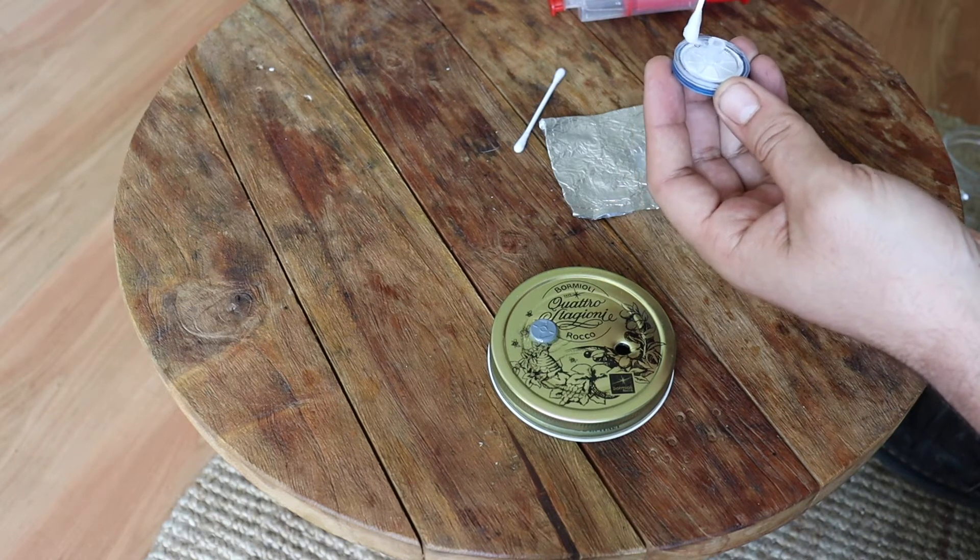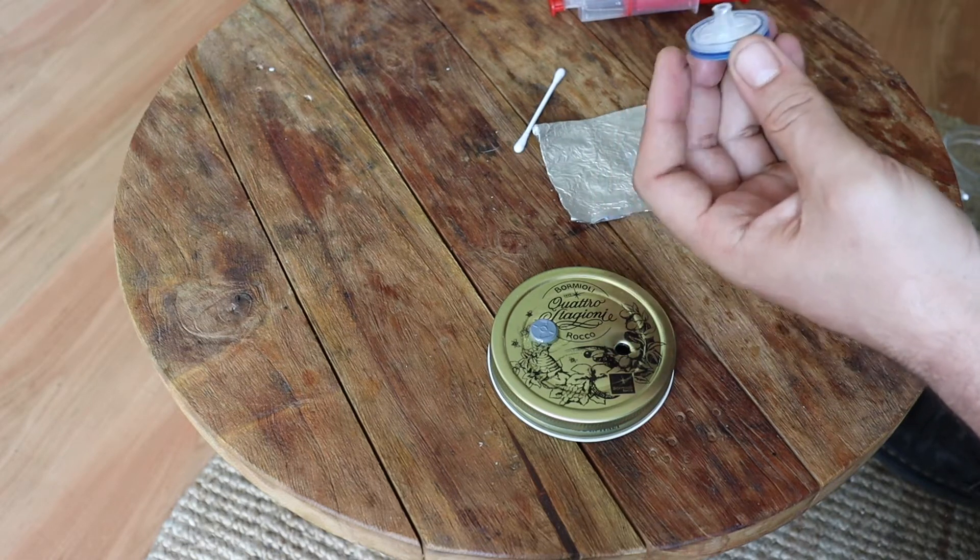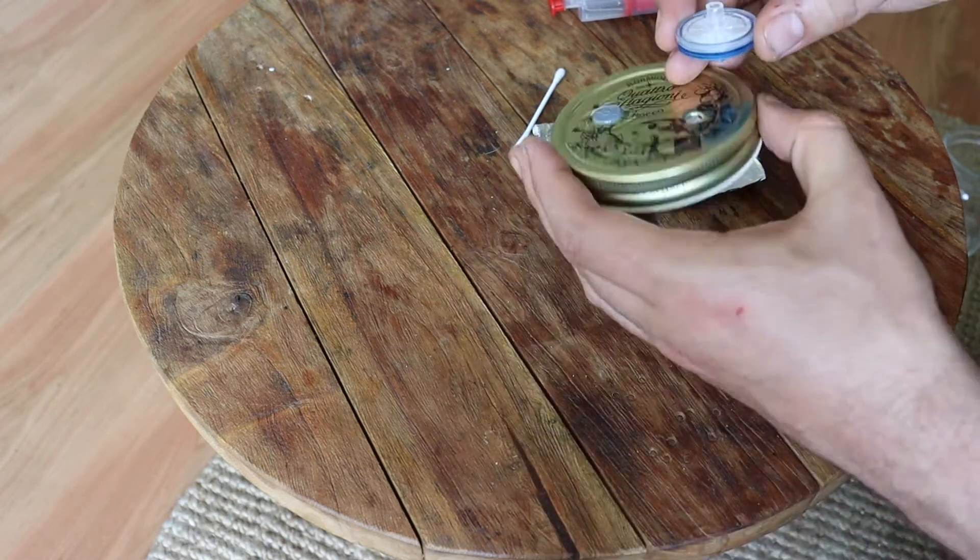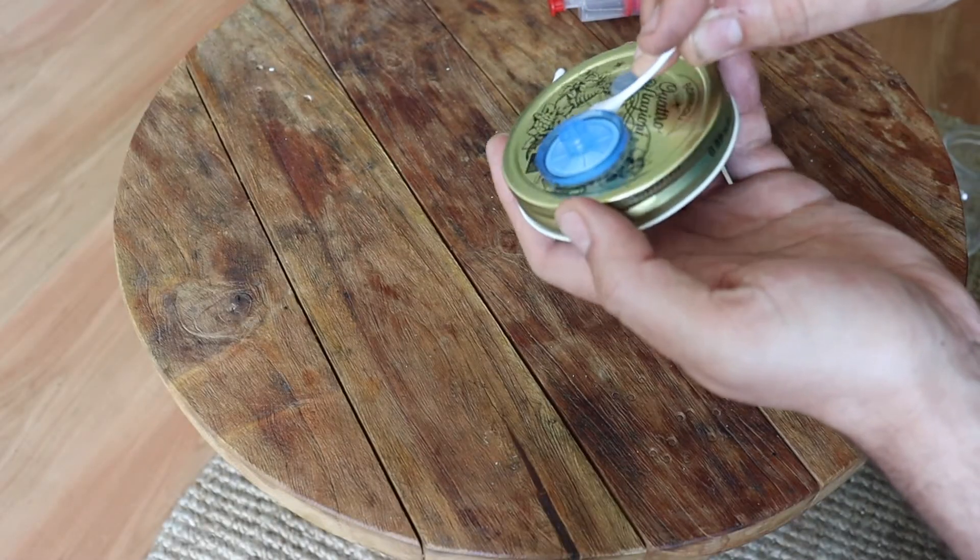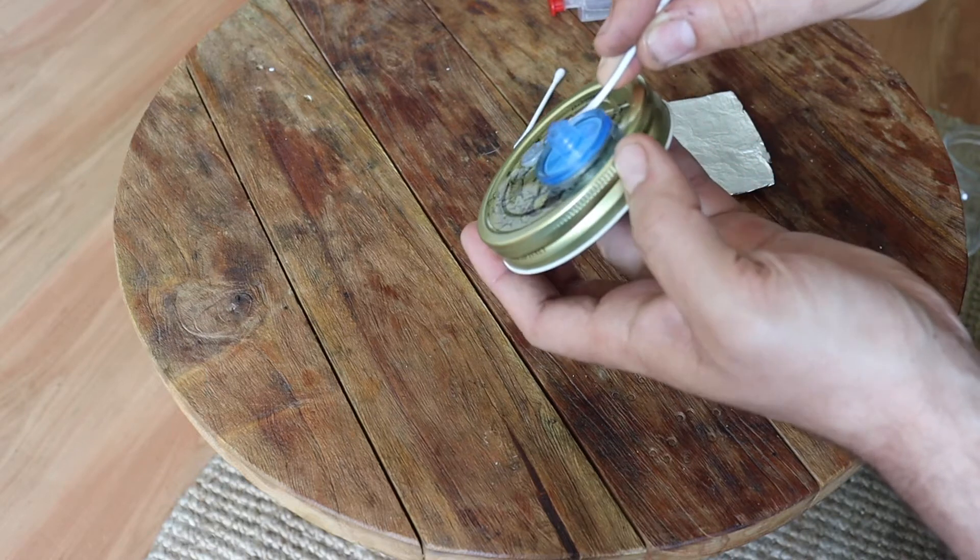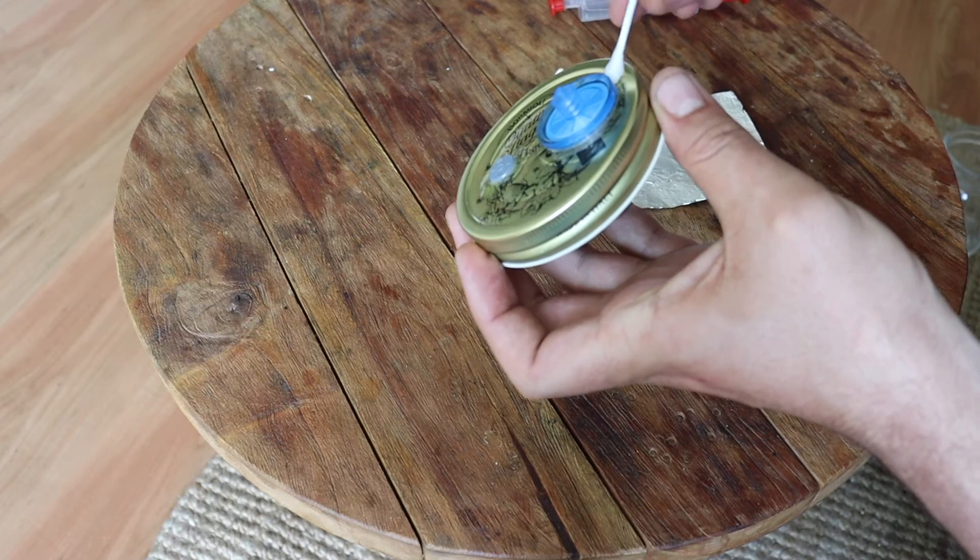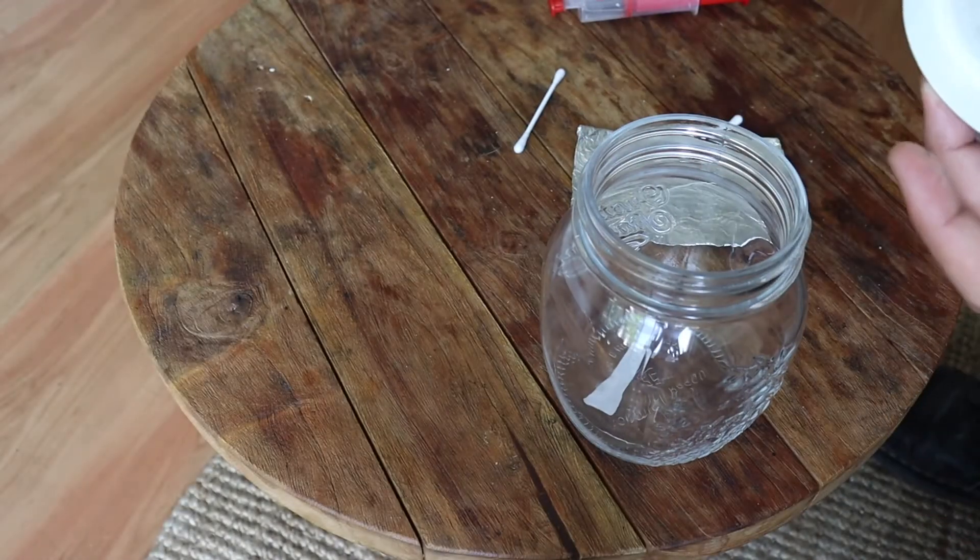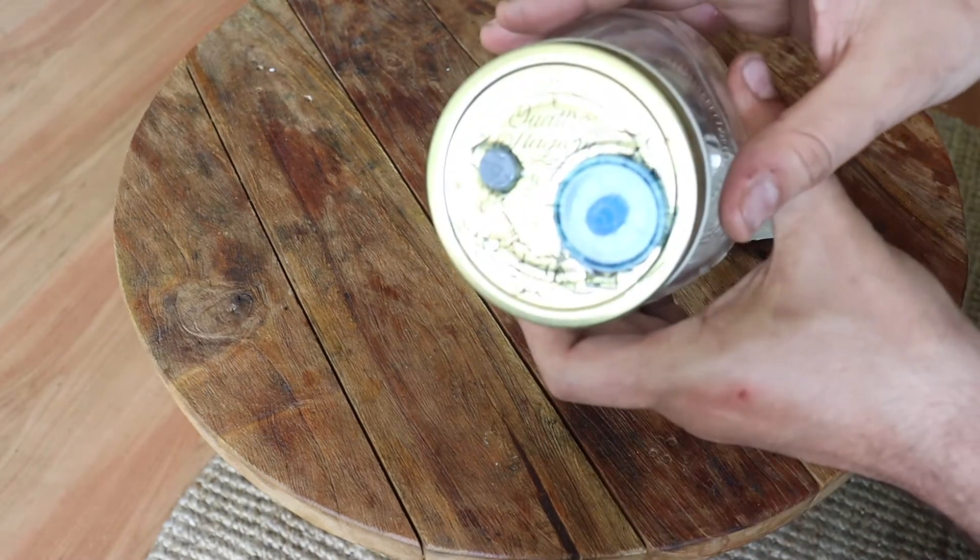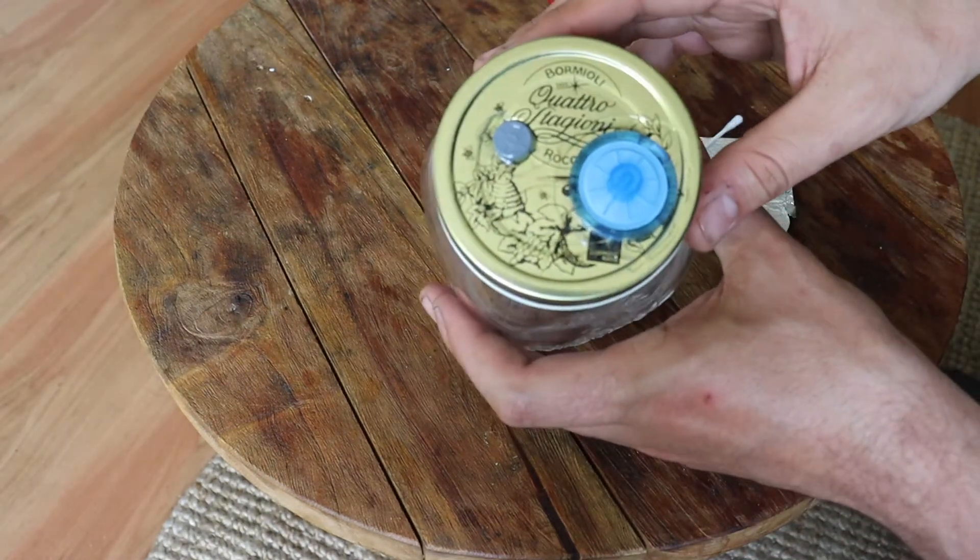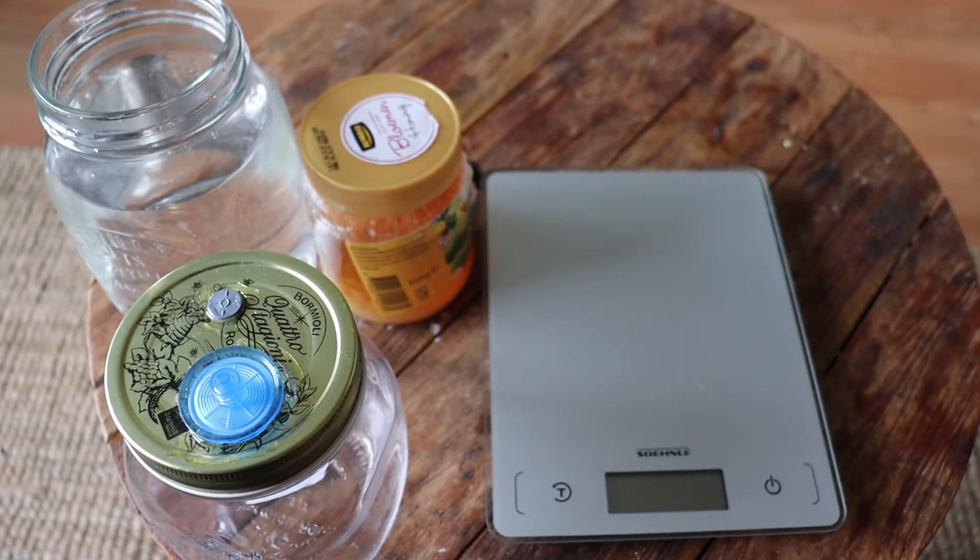And again, the same thing with the 0.22 micron sterile filter. Straight in there. Again, as with the silicon injection port. Just sealing it up nice and tightly. Keeping all the air out. All right. That's done. Easy as that. Lovely little jar. We're going to let that cure for that glue to harden. Okay.